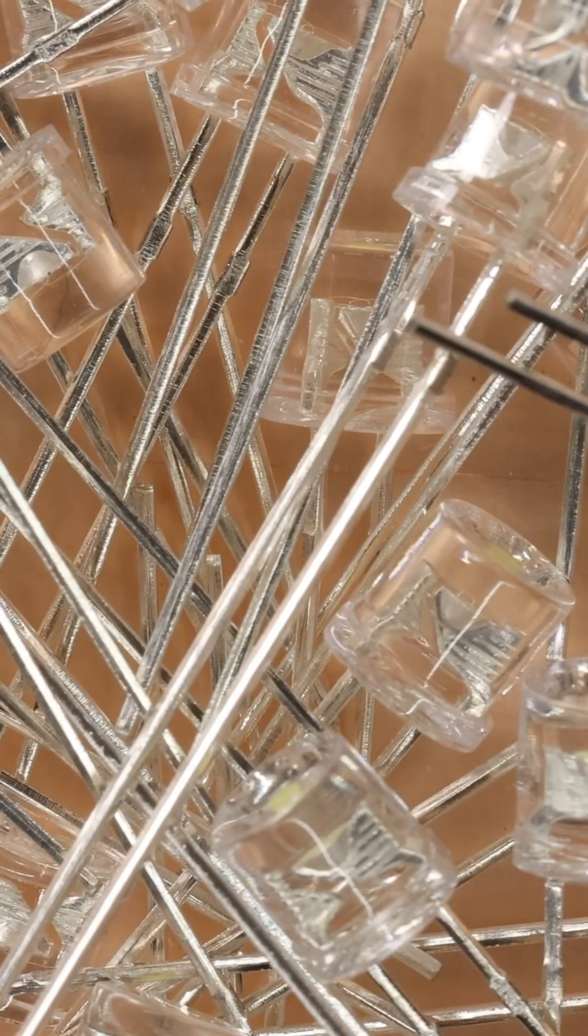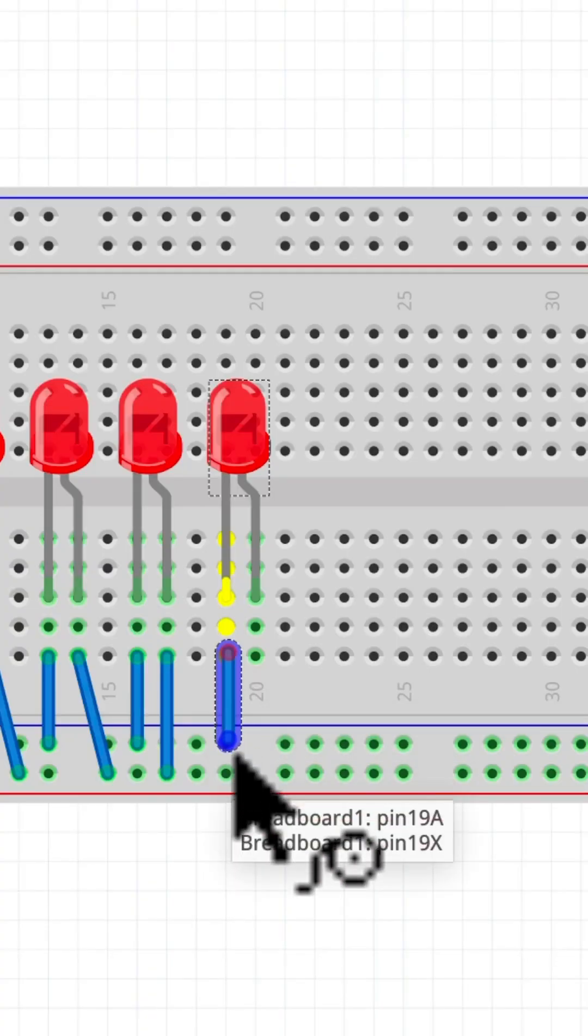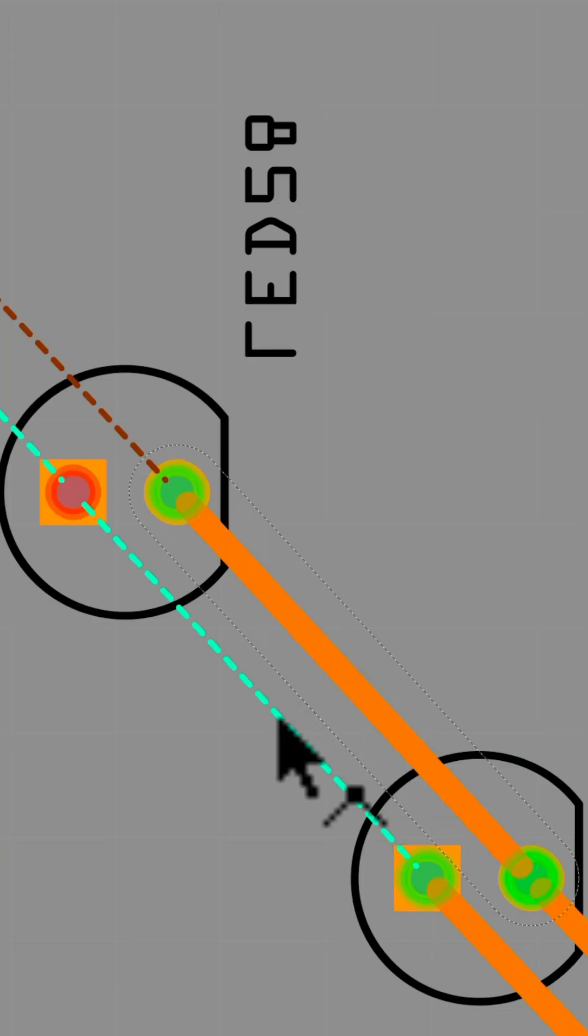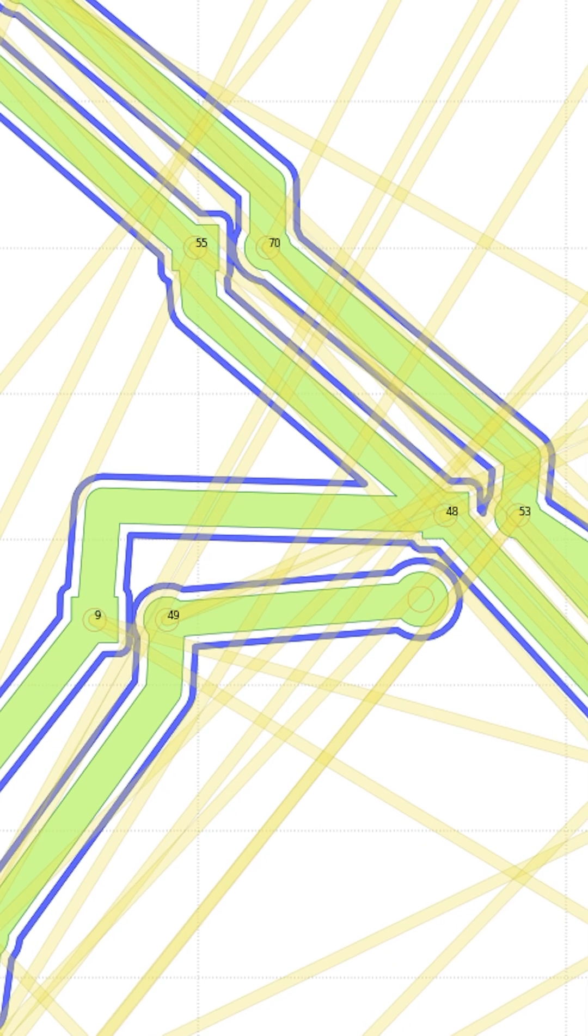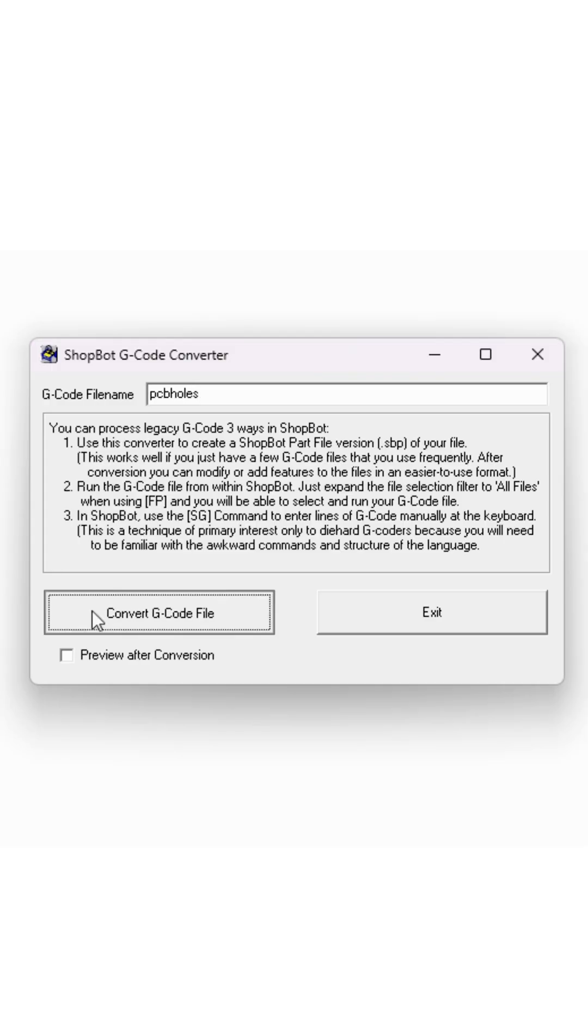Okay, we're going to make a circuit board. Let's start out by laying out our circuit in Fritzing, making our traces, and generating our G-code using FlatCam and OpenSBP.